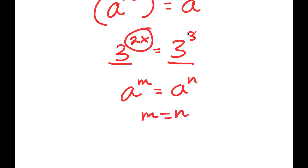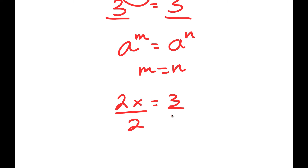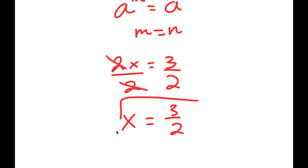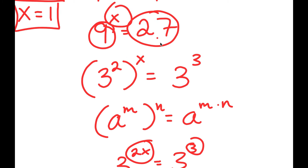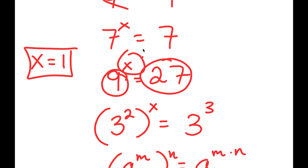So in this case, 2x is equal to 3. Now if I divide both sides by 2, I get x is equal to 3 over 2. That's how you typically solve these types of exponential equations.